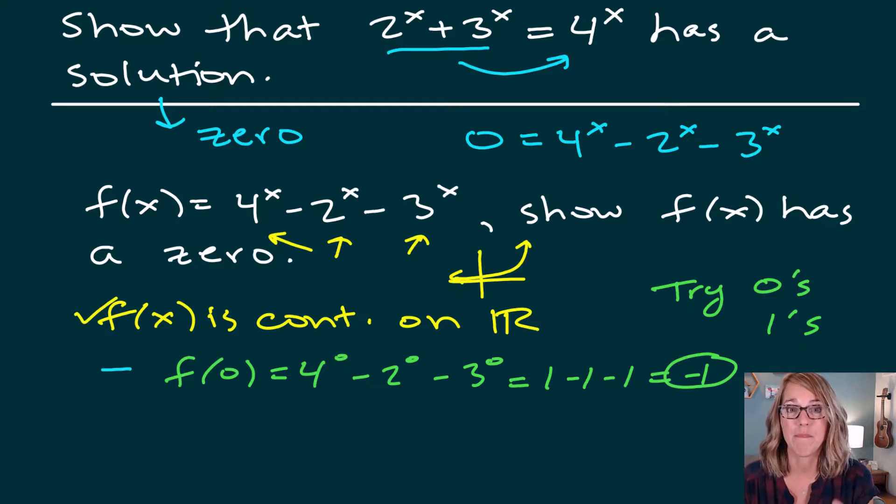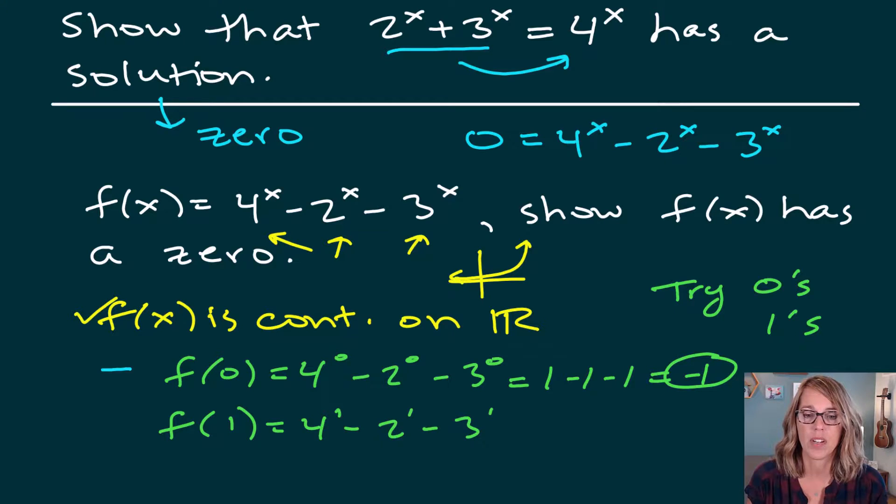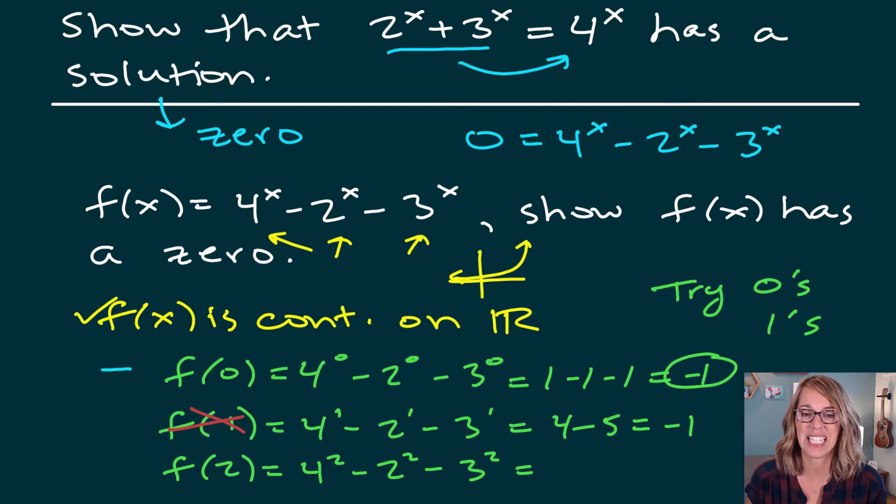Now I need to find an x value that makes f of x positive. I'm going to go ahead and try one. So f of one is equal to four to the one minus two to the one minus three to the one. This is four minus five. It's still negative. So I can cross that one off. I'll bet two works though. So f of two is going to be four squared minus two squared minus three squared. This is 16 minus four minus nine. 16 minus 13 is three. And I found my positive value.